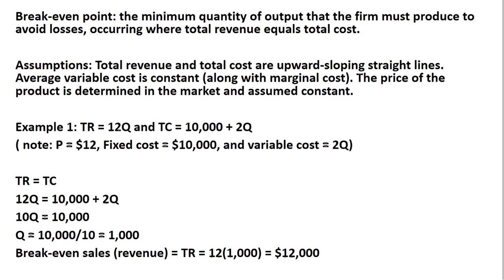Some simplifying assumptions: total revenue and total cost are upward sloping straight lines. In other words, the slope of total revenue and the slope of total cost are constant. As a result, the average variable cost is constant, and marginal cost will also be constant. The price of the product is determined in the market and is independent of the firm's output, and we'll assume that the price is constant as well.